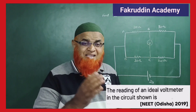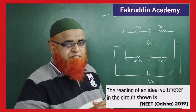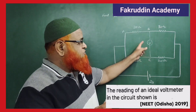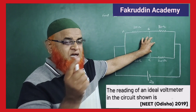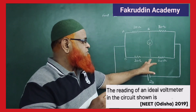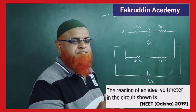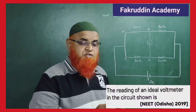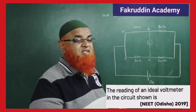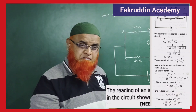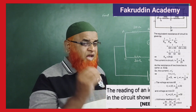This question was asked in a previous year NEET exam. There is a circuit diagram, and we need to find the potential across two terminals B and C, and what the voltmeter reads between these terminals. The battery is 2 volts and resistors are given. The textbook answer is very lengthy and confusing, but can we solve this problem in a very easy way?